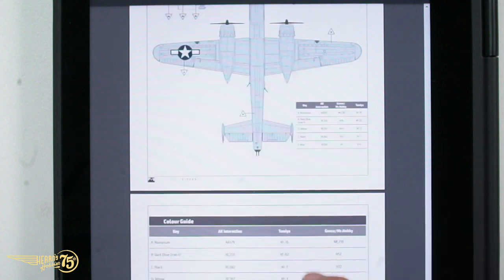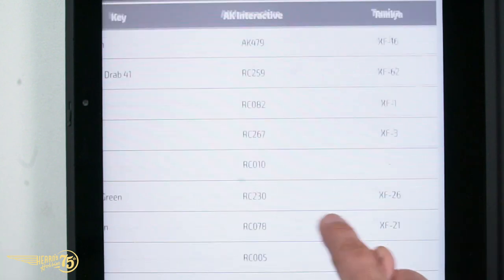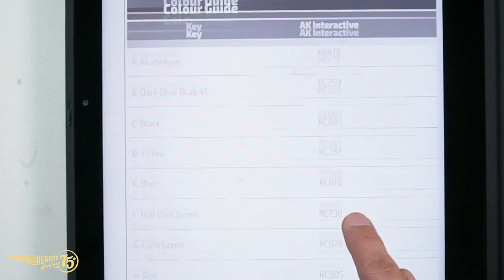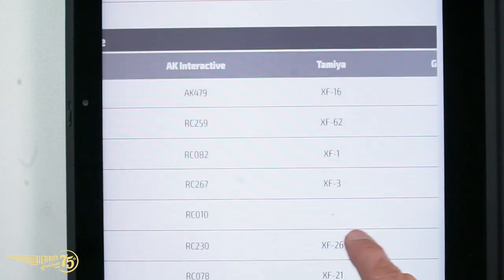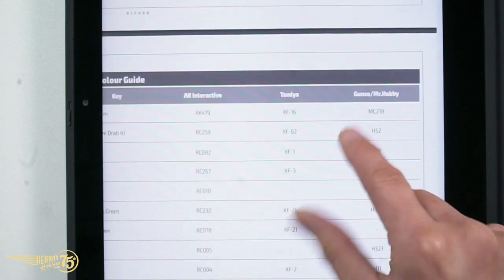And then we've got a paint chart. Let's move it up here. There's your paint chart. So this has got all the colors here. And you've got choices of AK Interactive, Tamiya codes, or Gunze Mr. Hobby codes as well. So there you go. That is it.